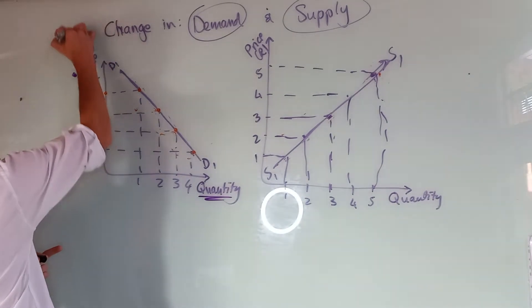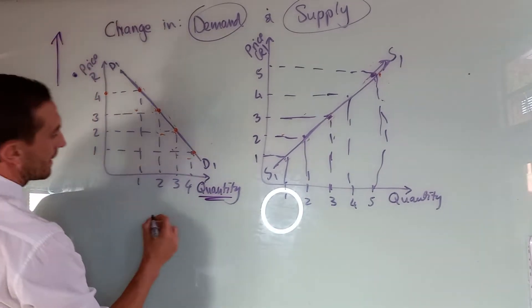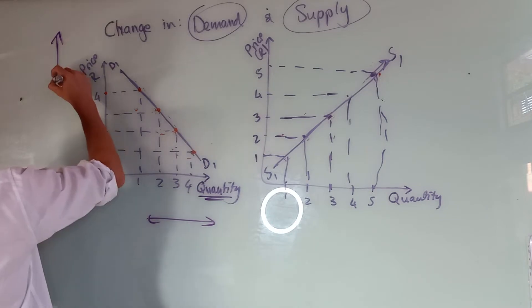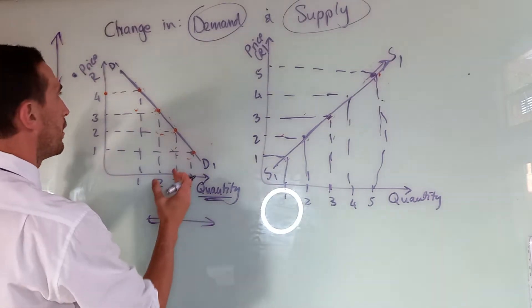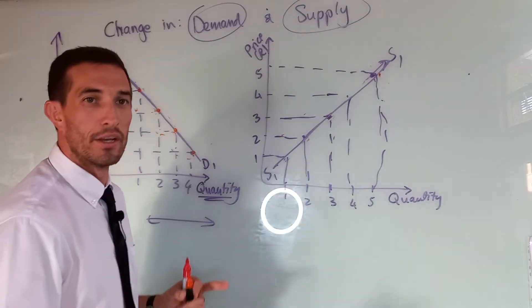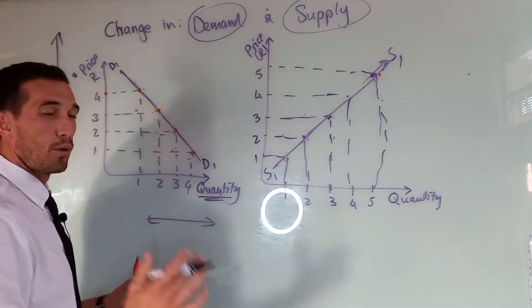Price will always be on your vertical axis and quantity will always be on your horizontal axis, and you have to plot it in relationship to each other. And you always have a table.